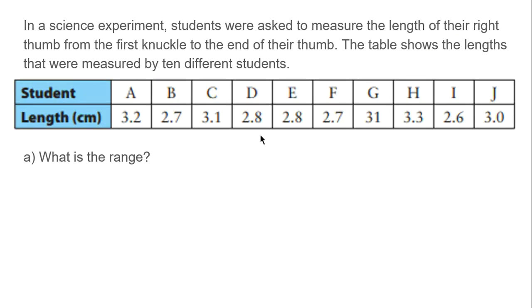So, in a science experiment, students were asked to measure the length of their right thumb from the first knuckle to the end of their thumb. The table shows the lengths that were measured by 10 different students. What is the range? So, we're looking for the highest or the lowest. 3.2, 2.7, 31. That's the highest. This looks to be the lowest. So, 31 minus 2.6 equals 28.4. So, the range is 28 centimeters.